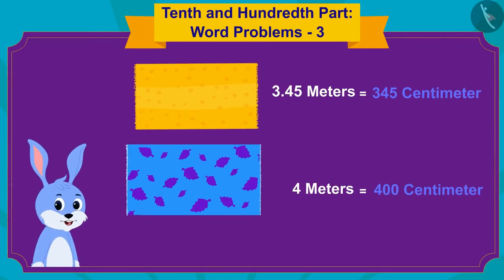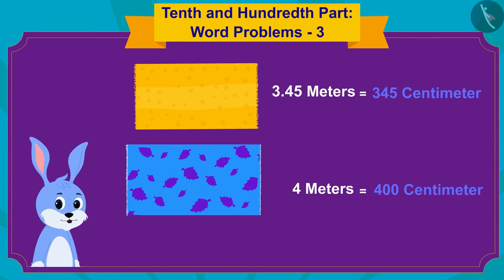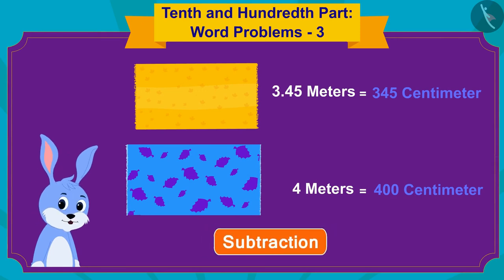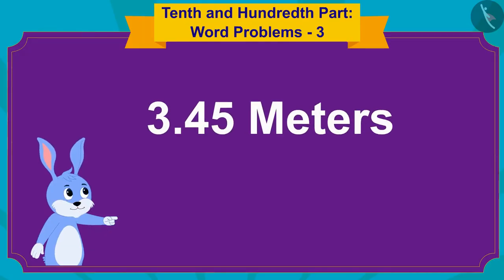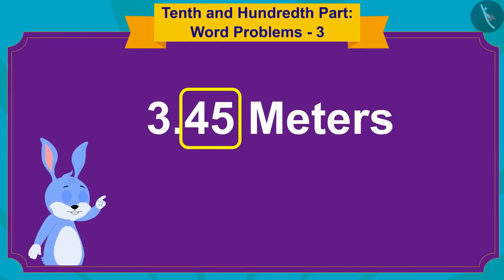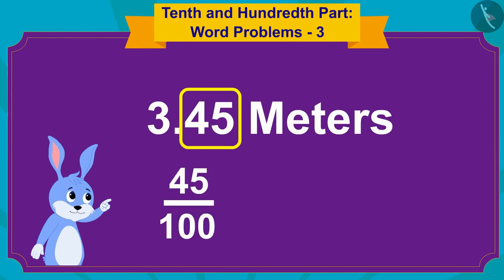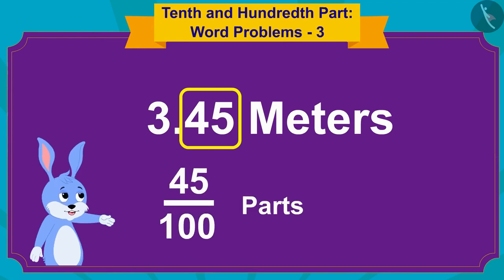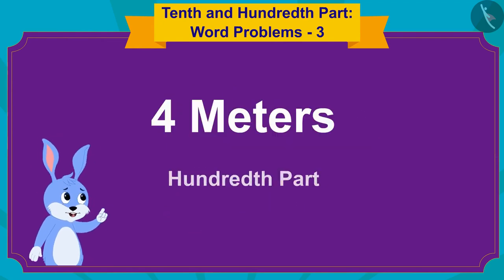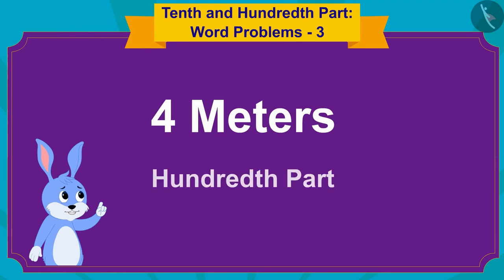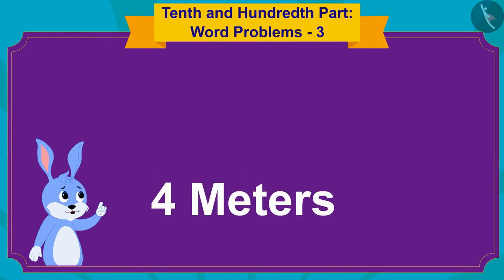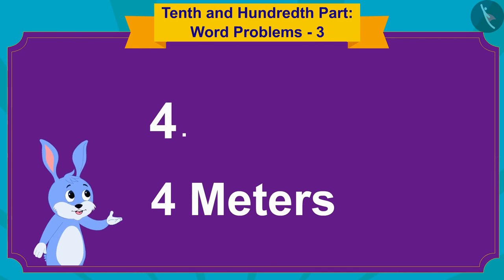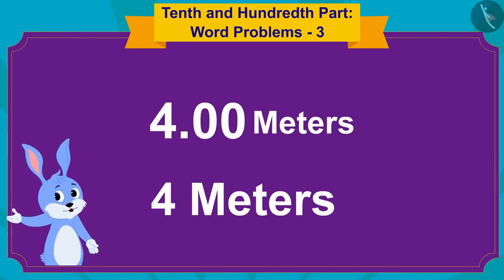Oh, let me find the answer by using the subtraction process. In 3.45, 45 is the 45 hundredth part. But there is no hundredth part in 4. So I can also write 4 as 4.00.